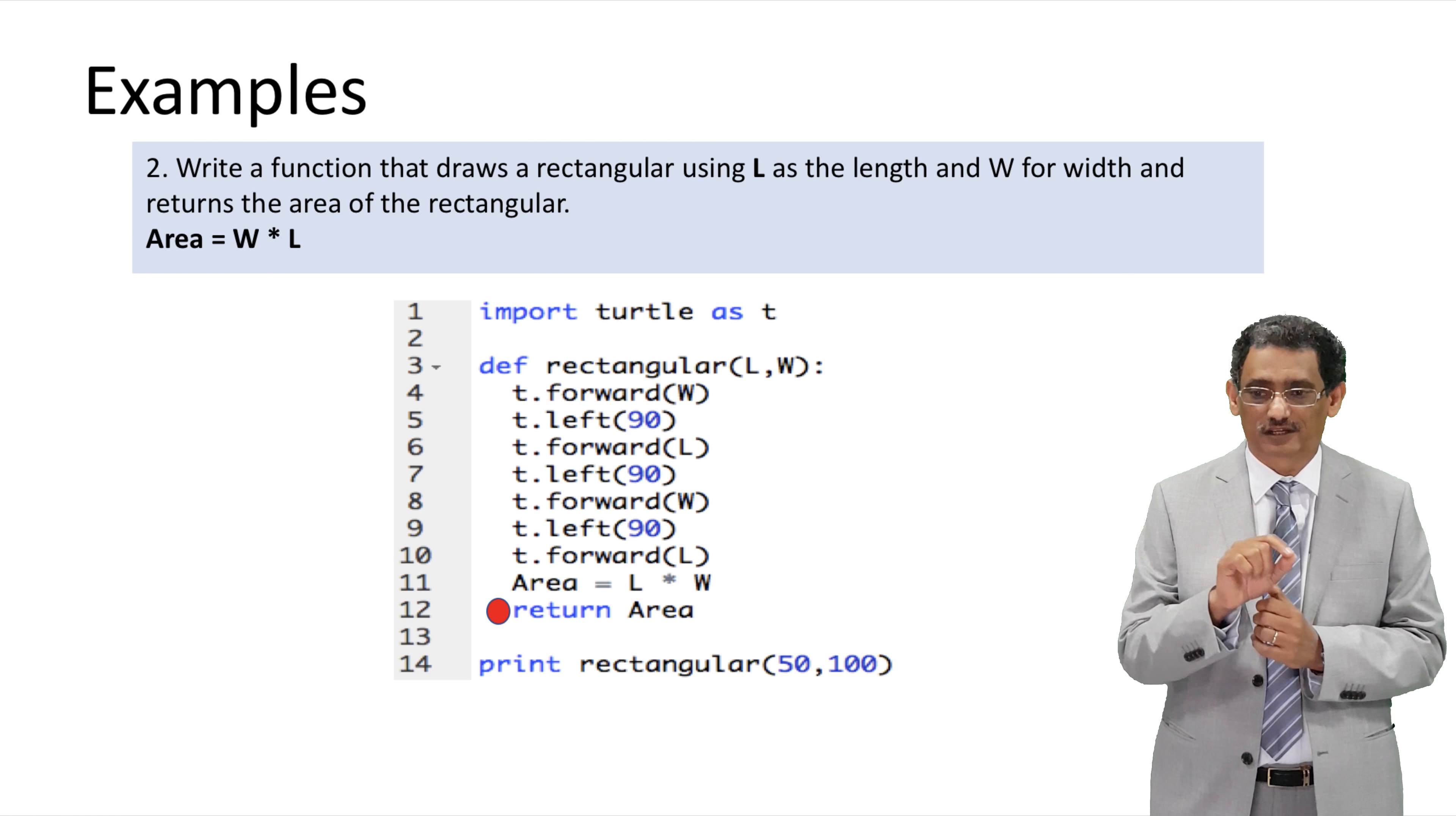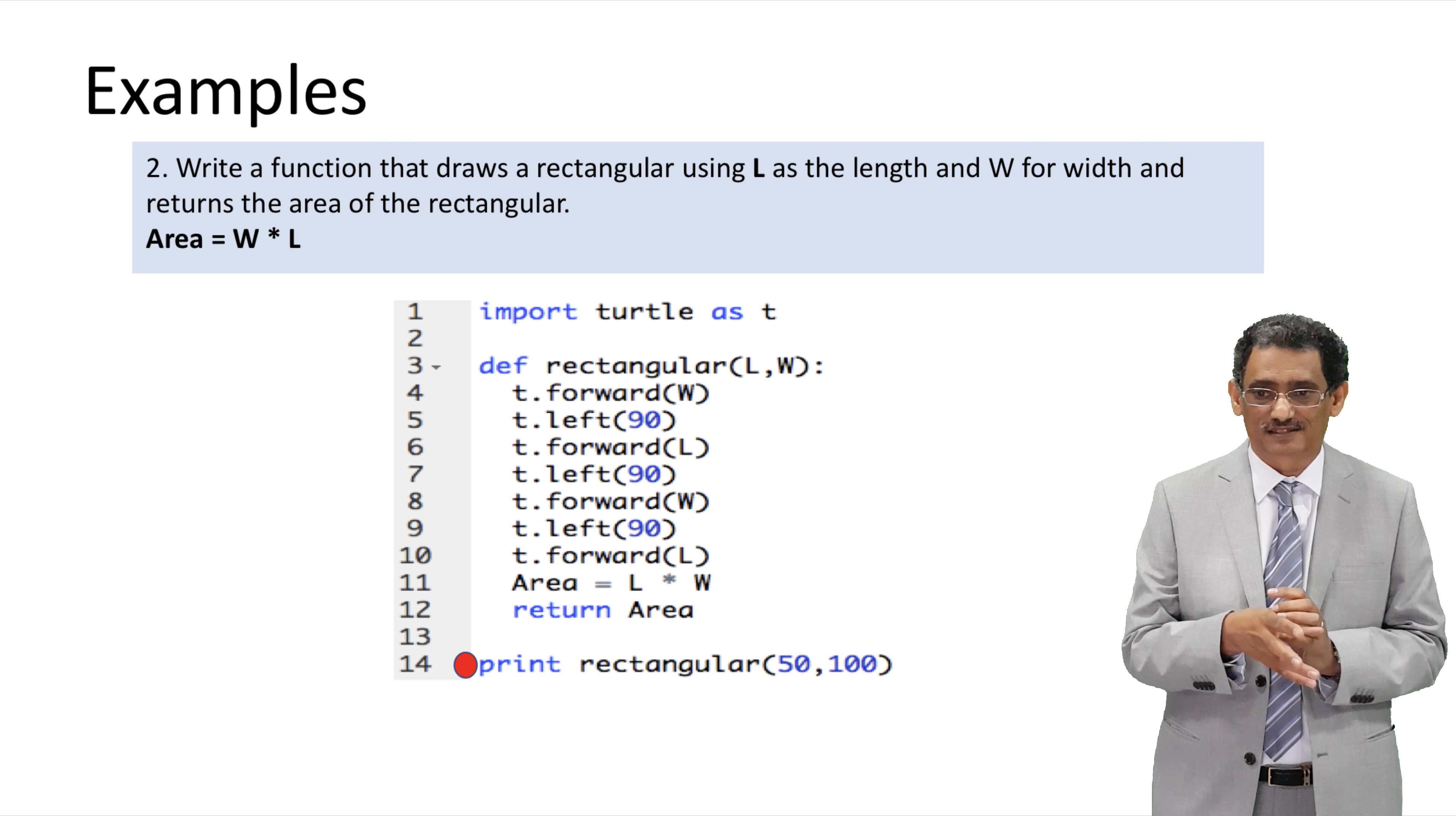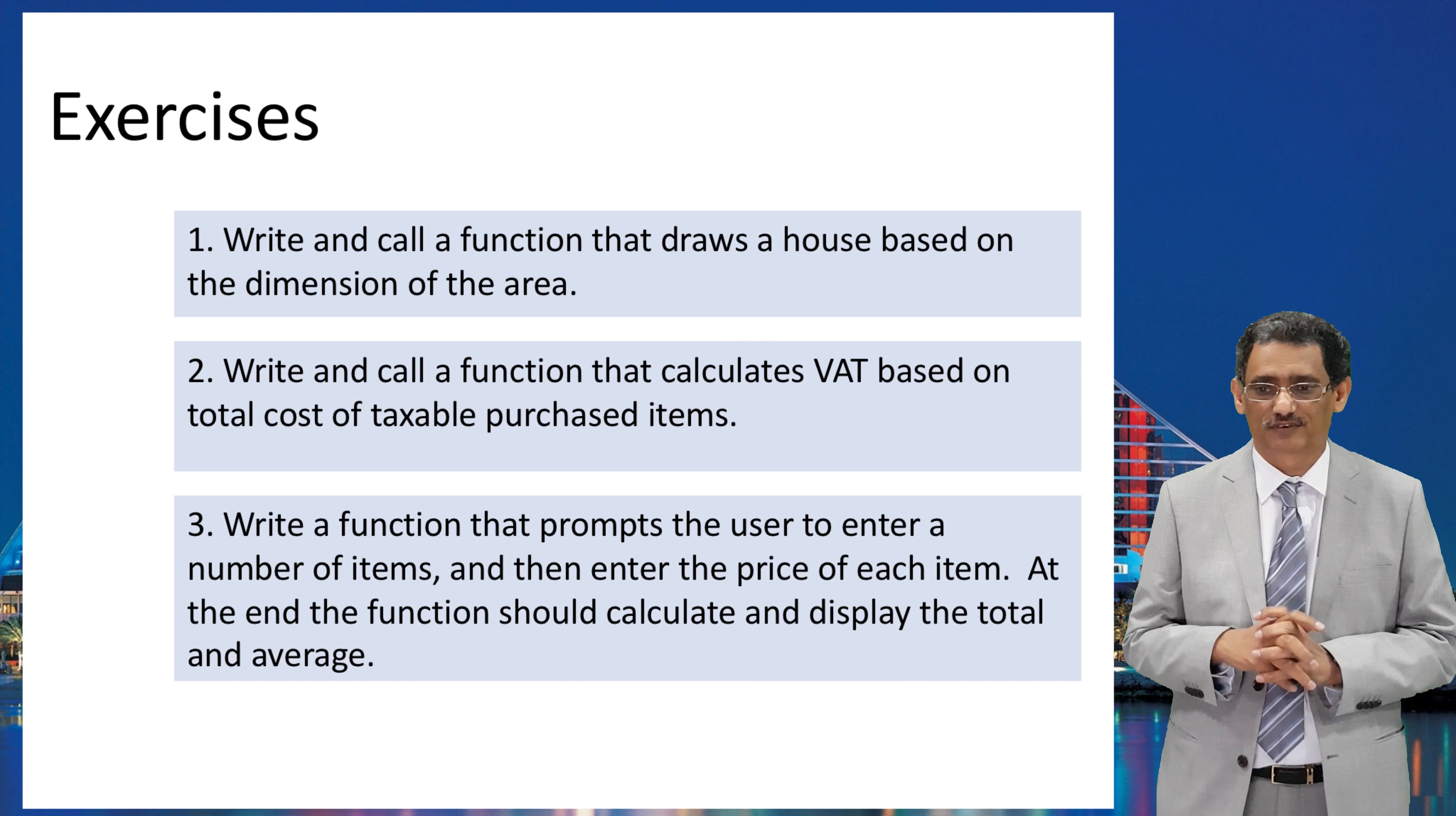Because, again, this is something we need to start thinking of, is the scope of our data, our variables. Where are those variables accessible? And we'll get into that in more details in next videos. So this one created the area, L multiplied by W. Then you see the keyword return. That keyword return is the one that will send back the result to the caller function. Now, the last line we have is print. We're printing the results. By calling the function rectangular, supplying 50 and 100, it will go to the function, it will draw the function, it will calculate the area, and it will return to us a value for area which will be displayed on the screen.